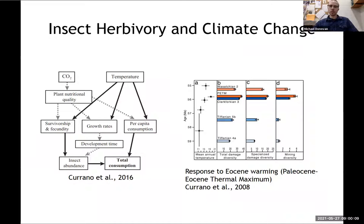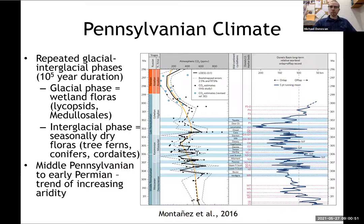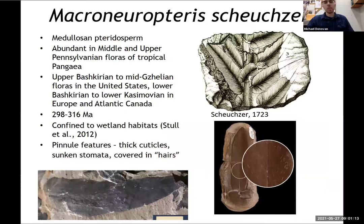Insect herbivory can be affected by climate change, as shown in the fossil record as well as modern studies manipulating temperature or carbon dioxide. Increases in CO2 can cause changes in plant nutritional quality, affecting growth rates and survivorship of insects. Temperature can also cause increases in growth rates. Using the fossil record, we can have natural experiments to see how plants and insects have reacted to climate changes over long time periods. During the Pennsylvanian, there were repeated glacial-interglacial phases with shifts in forests — going from wetland forests to dryland forests and back. There is also an overall trend of increasing aridity starting in the middle Pennsylvanian.